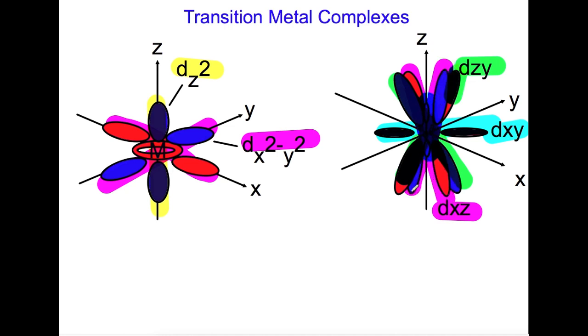This is quite a complex diagram. As these ones face in between the axes, this means that they do not face the ligands directly when the ligands start to approach the metal ion when we form a complex.